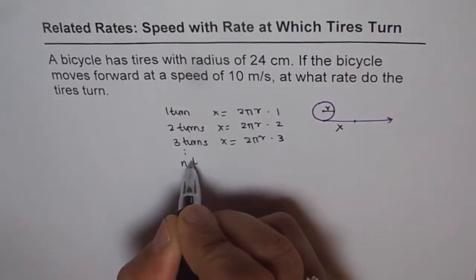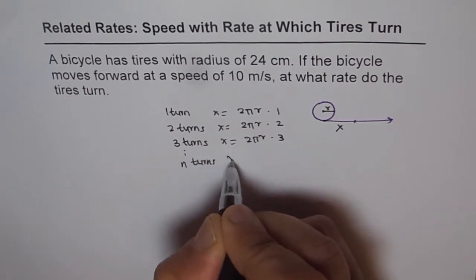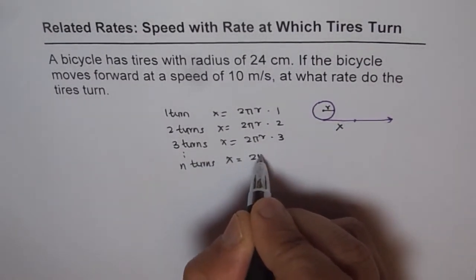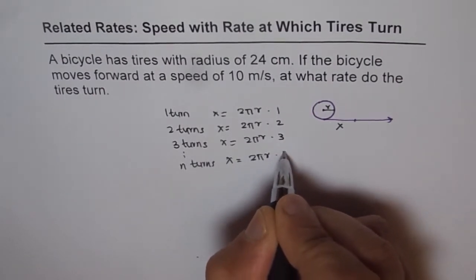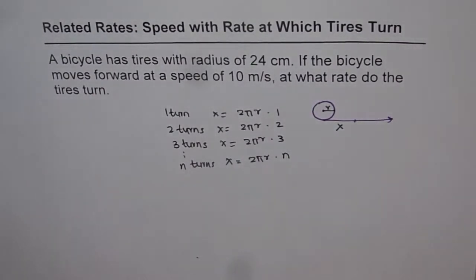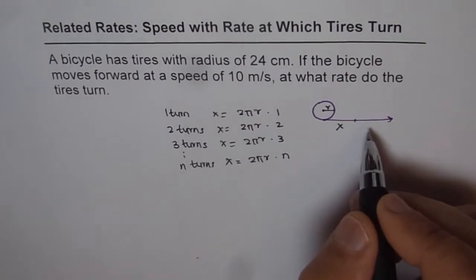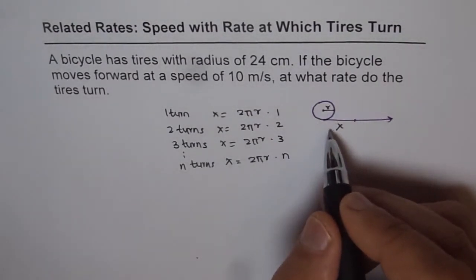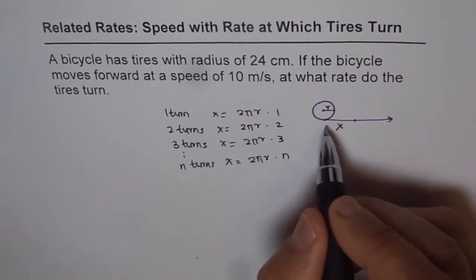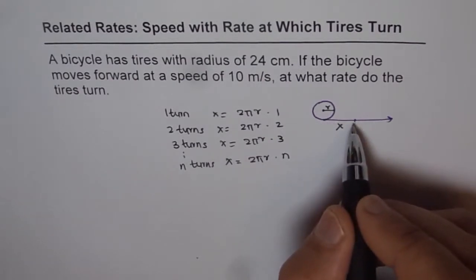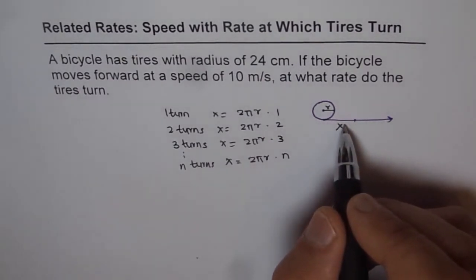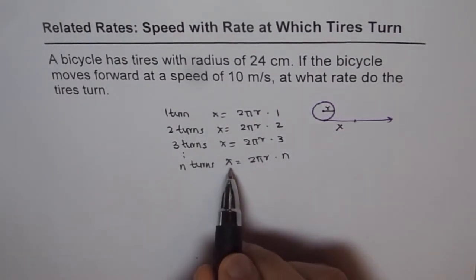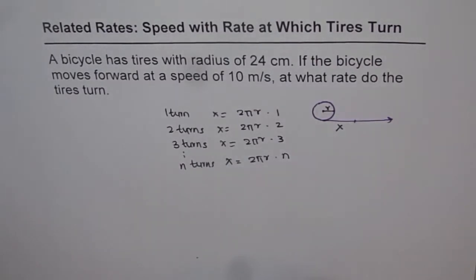For n turns, x, the distance moved horizontally, equals 2πr times n, the number of turns. That is how this linear distance is related with the radius. If you know the rate of change of distance versus speed, then you can find rate of change of number of rotations, since both are related with this equation.